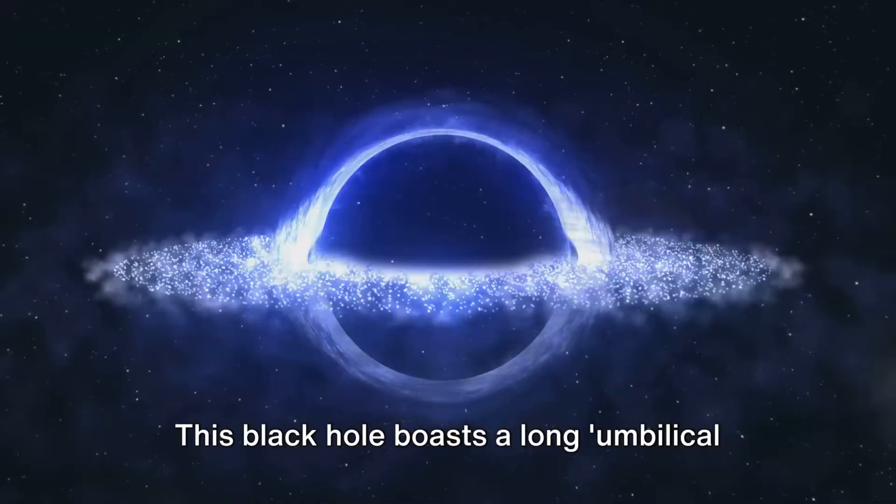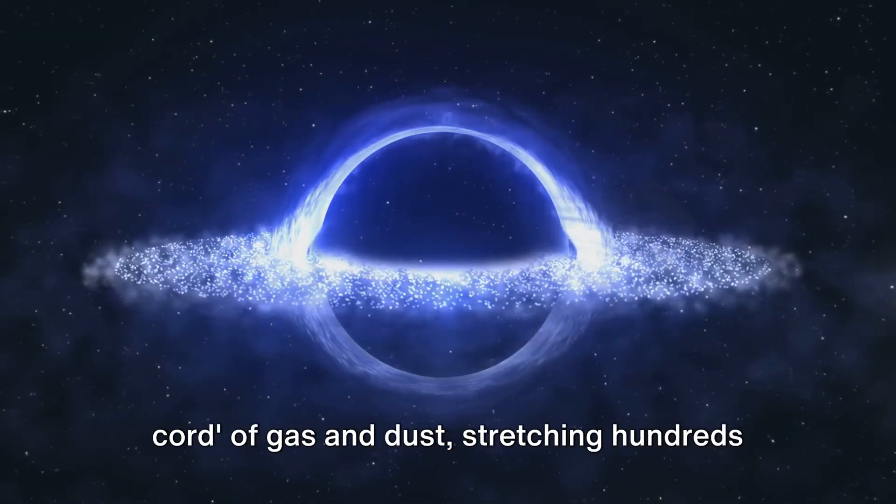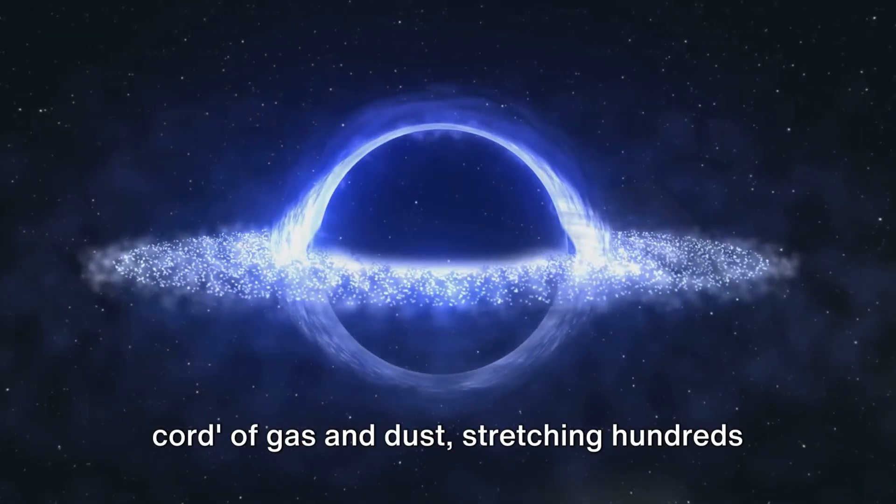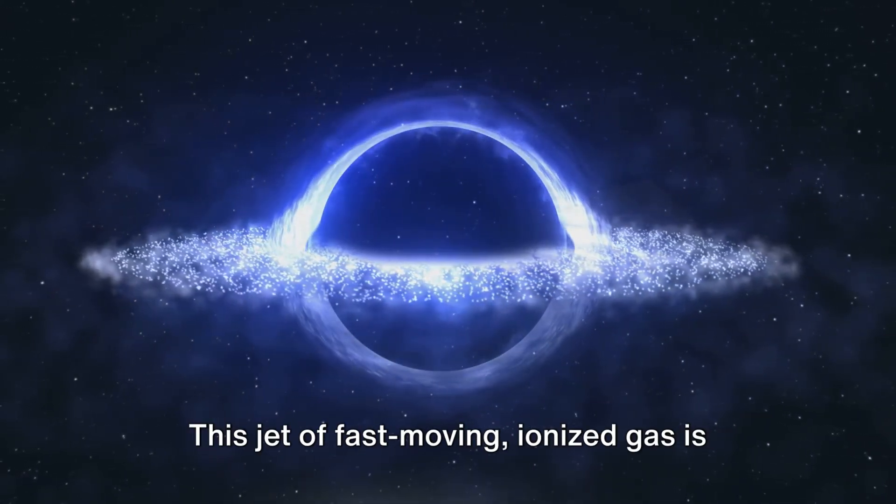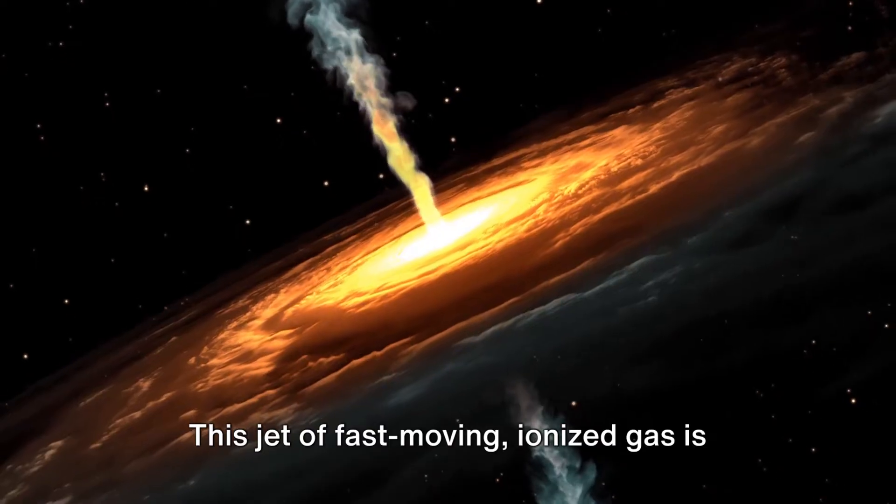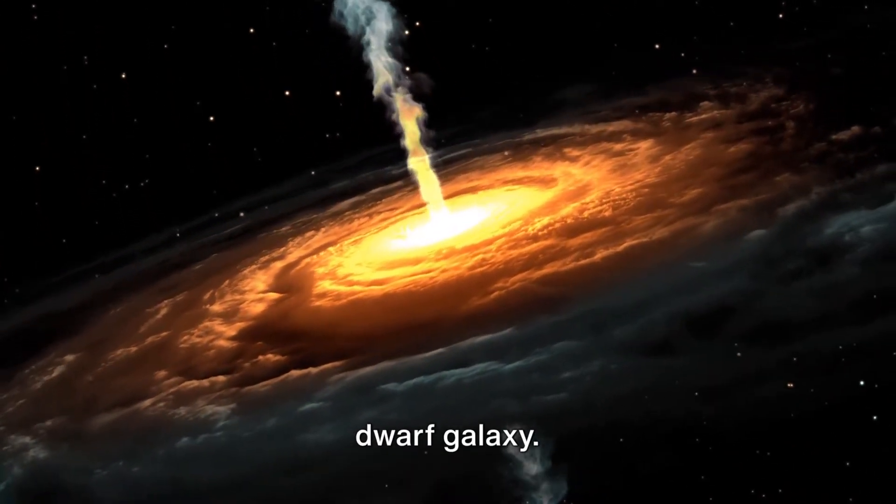This black hole boasts a long umbilical cord of gas and dust stretching hundreds of light years from its edges to a dense field of baby stars. This jet of fast-moving ionized gas is feeding new star formation in a nearby dwarf galaxy.